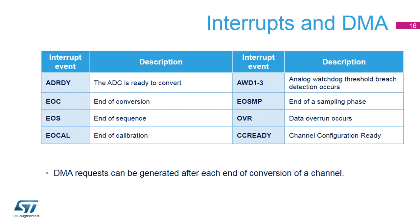Each ADC can generate eight different interrupts: ADC ready, end of conversion, end of sequence, end of calibration, analog watchdog, end of sampling, data overrun, and channel configuration ready. DMA requests can be generated at each end of conversion when the ADC output data is ready.